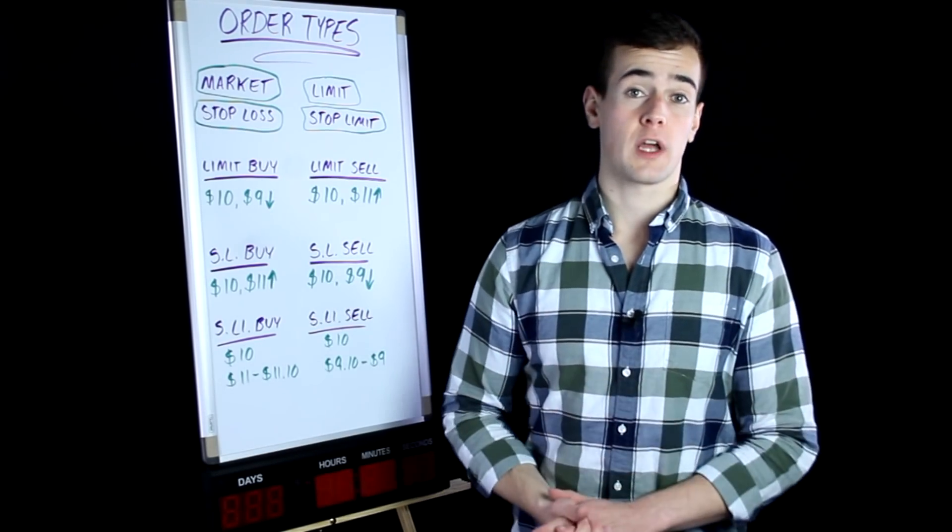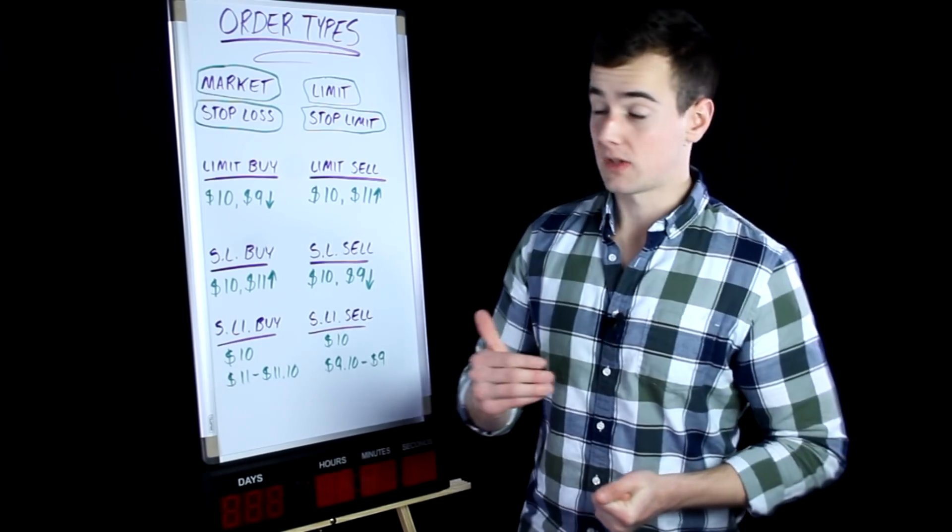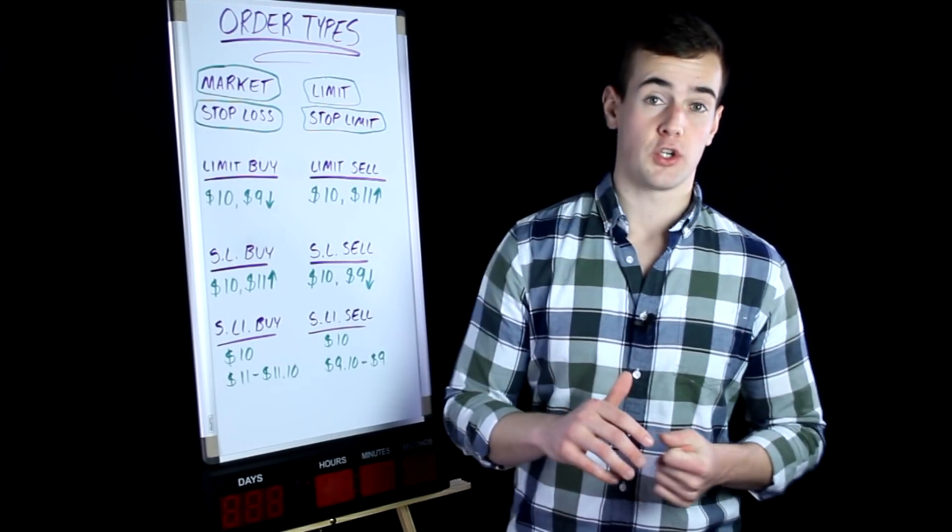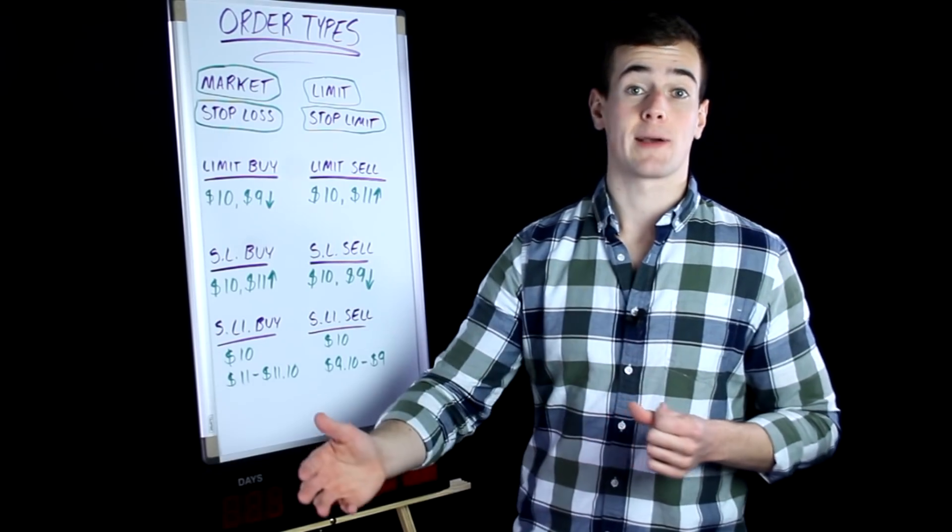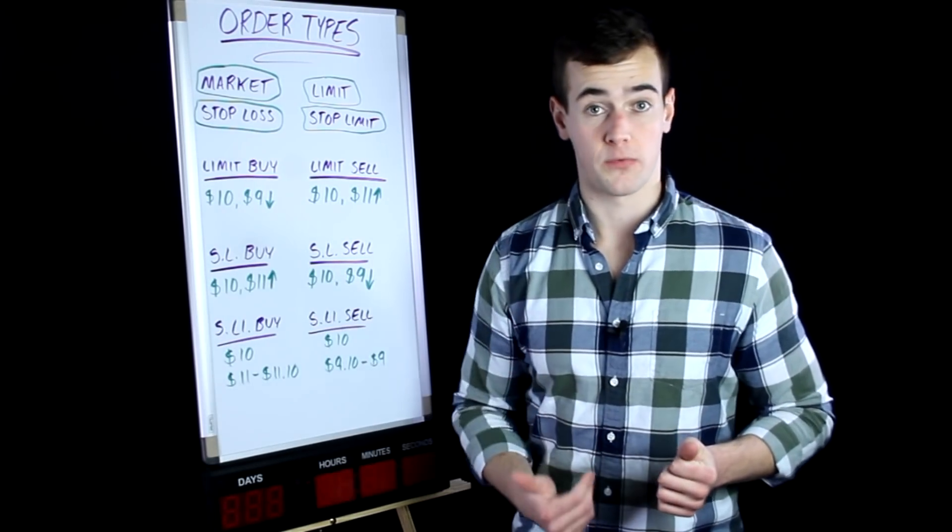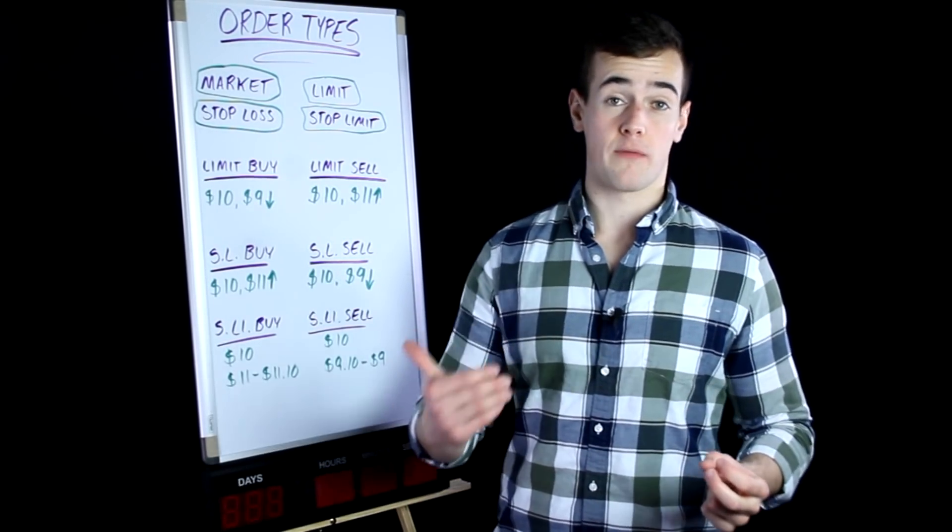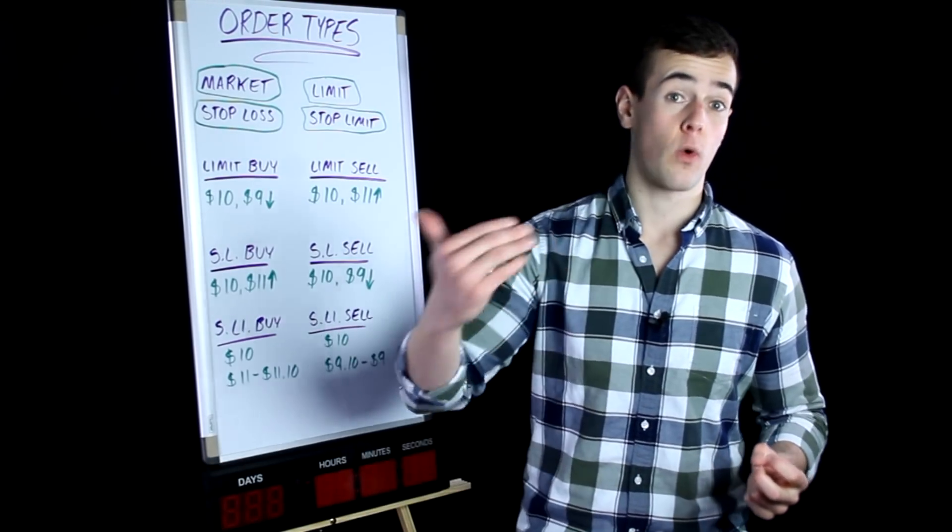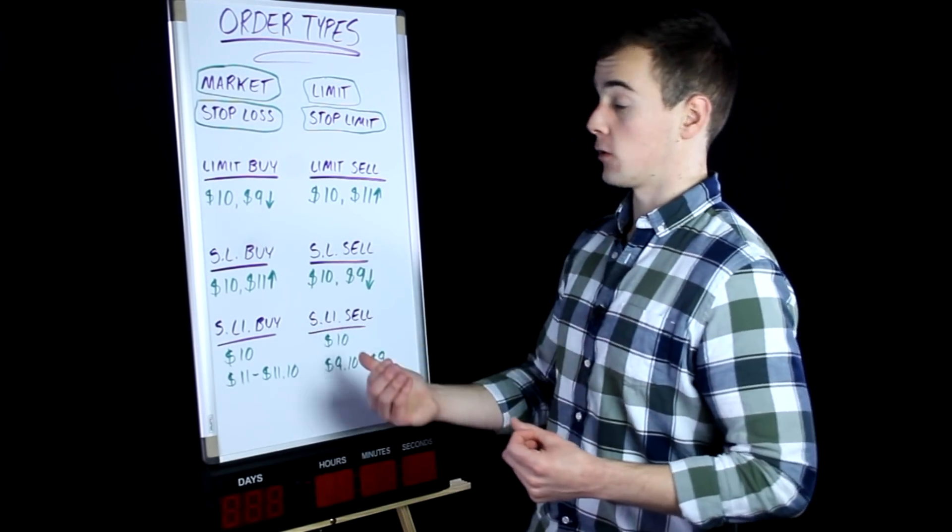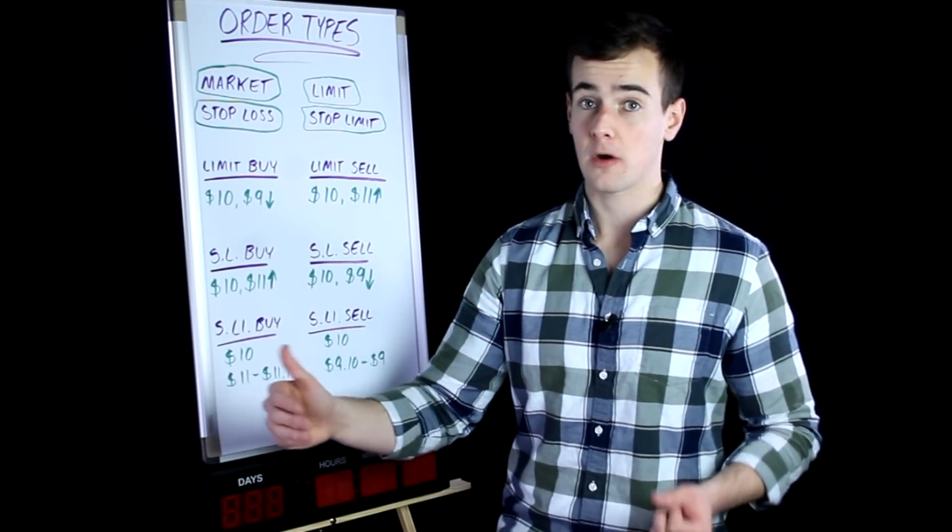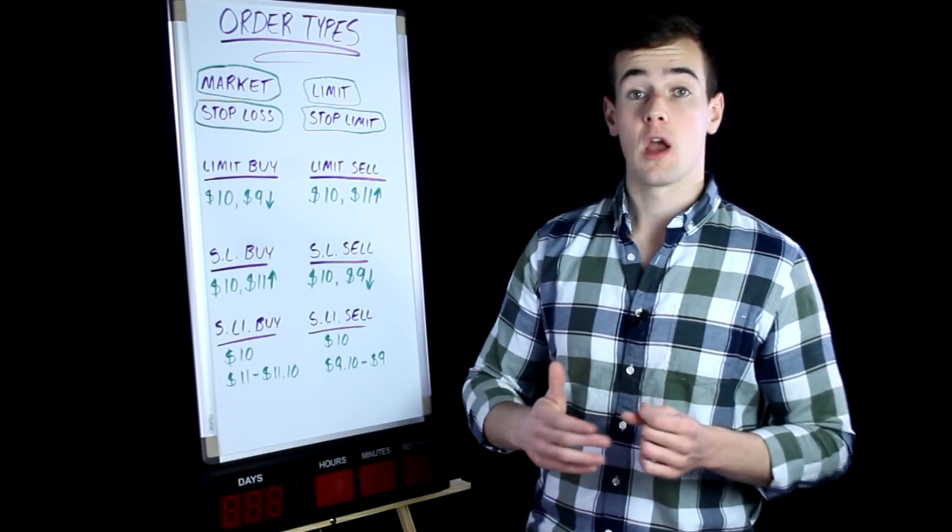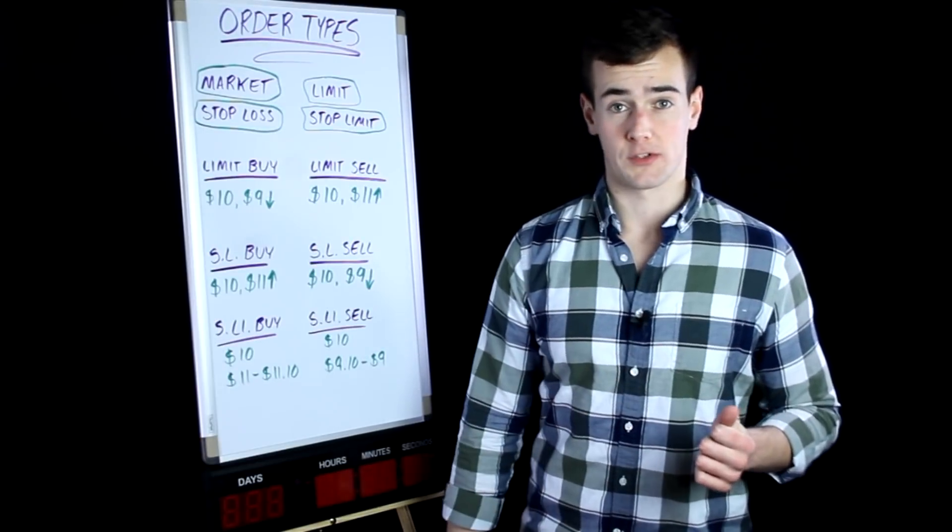But here's the problem with this order type is there is no gap protection. So let's say that the stock closed at $10.50 a share. Overnight, you find out the company is being bought out by someone and the stock opens at twice the price it was before. Well, guess what? That stock is above $11 a share. Maybe it's even $20 now and your order is filled because your only criteria is the stock has to be above $11 a share. So there's no gap protection with buy or sell stop loss orders.